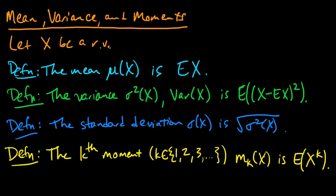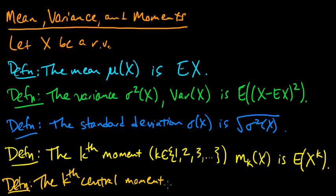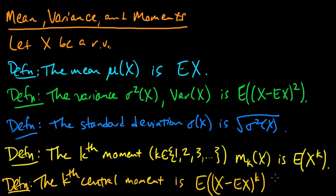Closely related is the kth central moment, also for k a positive integer. It is the expected value of x minus its mean, to the kth power. So you subtract off the mean. For k equals one, the first moment is just the mean. And for k equals two, the kth central moment is the variance.